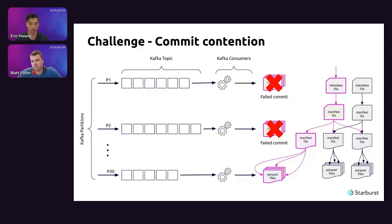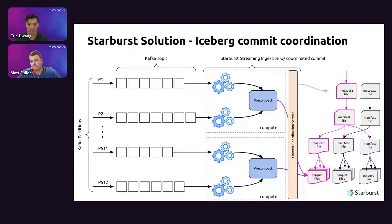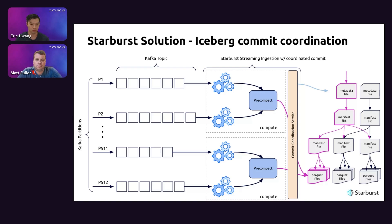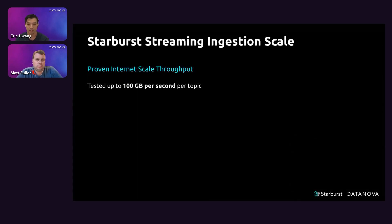We clearly need a more scalable solution. At Starburst our streaming solution includes a custom commit coordination service that coordinates between all tasks, preventing conflicts, and batches and merges work together to compress the commit load. This all happens in the background — you don't have to think about it. To show how far we could push our system, we ran tests and demonstrated that it can easily handle Kafka topics with throughputs up to 100 gigabytes per second — equivalent to roughly one petabyte every three hours.